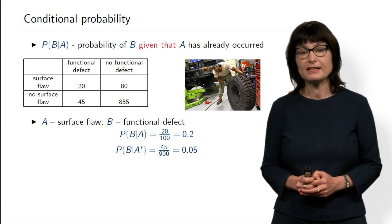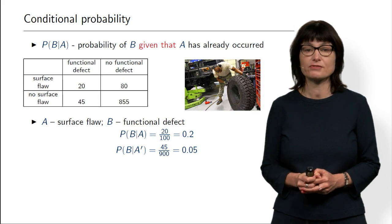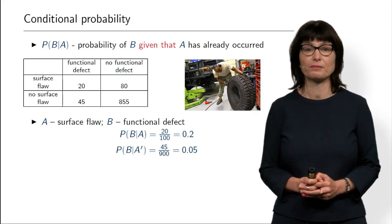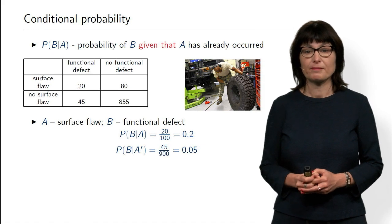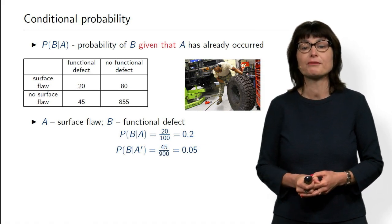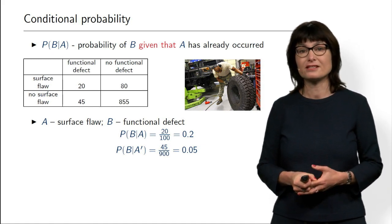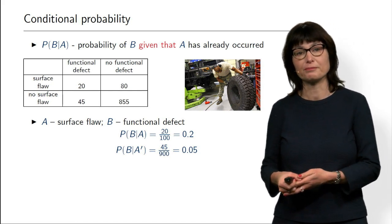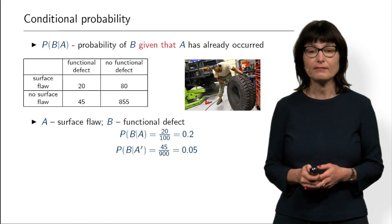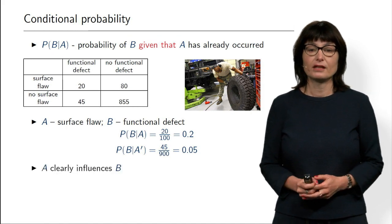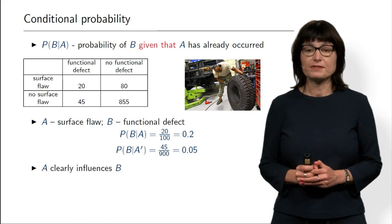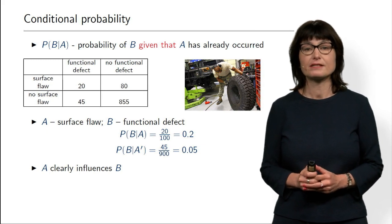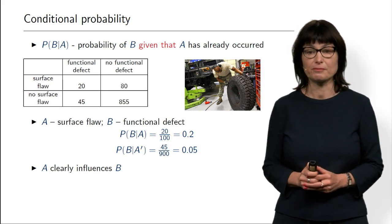What we see here is that event A, the surface flaw, influences event B. That's why it makes sense to talk about conditional probabilities — because given A, we have more information about B. As an engineer, you can imagine that if something goes wrong, there is more likely to be other defects as well. So again, A influences B, and this is what we express with conditional probabilities.